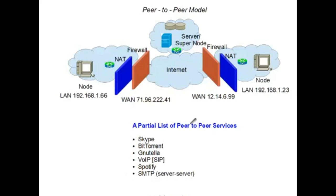This is a partial list of peer-to-peer based services. Skype, purchased by Microsoft, has tens of millions of users worldwide and is a Voice over IP peer network. BitTorrent and Nutella are file sharing networks. Almost all VoIP networks are peer-to-peer. Skype doesn't use the Session Initiation Protocol (SIP), which is the most popular IETF-based protocol for VoIP, but companies like Vonage and telephone companies use SIP, which is a peer-to-peer protocol. Spotify is also a peer-to-peer music streaming service.